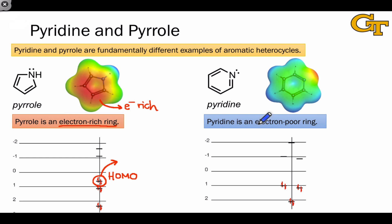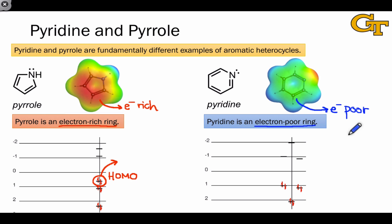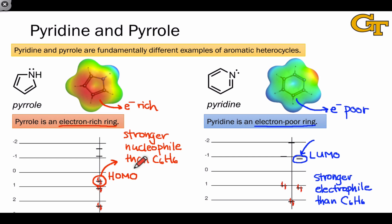This means that pyrrole's electrons are more apt to be donated to an electrophile or an acid than the pair of electrons in benzene. Pyridine, on the other hand, is an electron-poor ring, and the resonance structures with positive charge on carbons and the electrostatic potential map emphasize this. The light blue and green regions near the carbon atoms of this molecule emphasize that the carbons of the ring are electron-deficient. This makes the molecule a better electrophile than benzene, or a worse nucleophile. We can see this in both the HOMO energy and the LUMO energy: the LUMO energy of pyridine is lower than it would be in benzene, making it a stronger electrophile or electron acceptor. This contrast helps us see why pyridine and pyrrole are fundamentally different heterocycles.